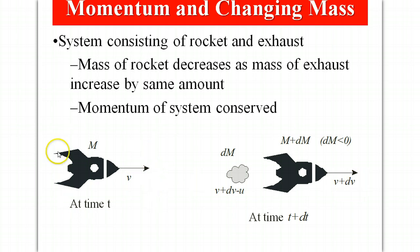So here's the before and this is the after and what we want to look at is during this process since the rocket exerts a backward force on the gas, the gas exerts a forward force on the rocket, the net force on the system is zero and therefore momentum of the system is conserved.